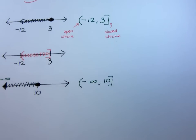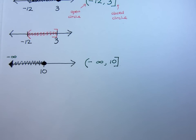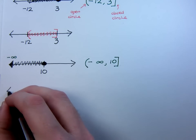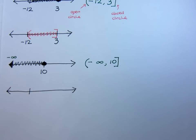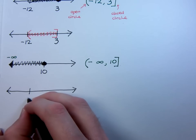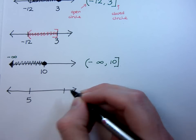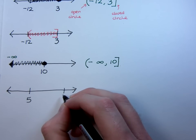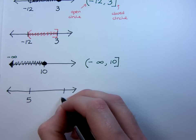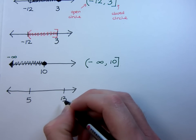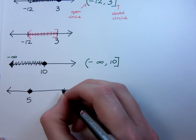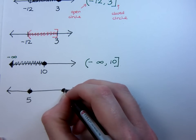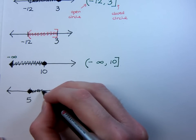All right, let's try a couple more. Let's try this guy. If I have from 5 to 13, and suppose I have closed circles on both of these, and I'm including everything that's in between.